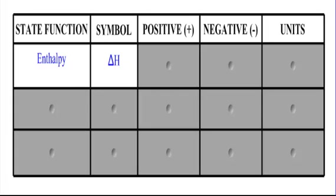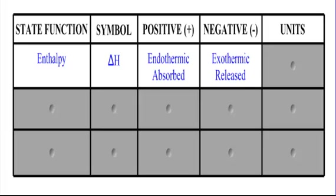Delta H can either be positive or negative. If it's positive, we have gained energy or gained heat, which means it absorbed — it's endothermic. If it's negative, that means energy has gone out of the system — it's released, it's exothermic. Our units for delta H are kilojoules per mole.